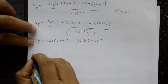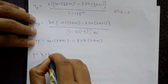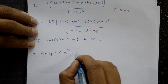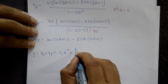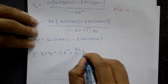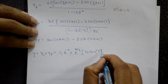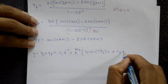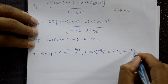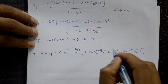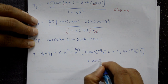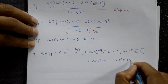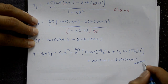The general complete solution is y = yc + yp. yc = C1·e^(-x) + e^(x/2)[C2·cos(√3/2·x) + C3·sin(√3/2·x)], and the particular integral is cos(2x+1) - 8sin(2x+1). This is the required solution.